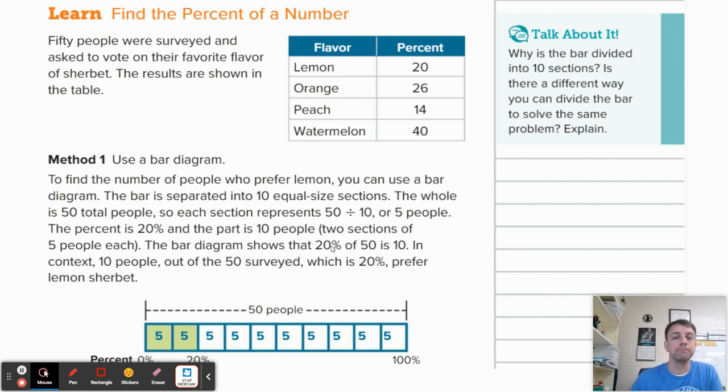So to find the number of people who prefer lemon, you can use a bar diagram as you see here. This is one option. Out of 50 people, if we break this down into 10% increments, we would find that 20% of people would end up being 10 people because 10% is five people. That's interesting because one of the things that I point out to students every year is 10% really just means we're moving the decimal over one place value. So 10% of 50 is five. That means if we double that to 20%, we're going to have 10. So 10 total people would prefer lemon.